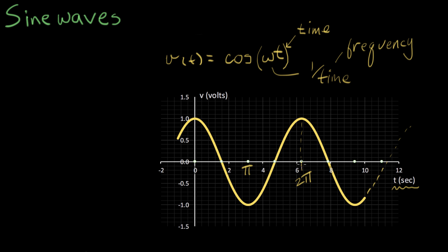So that's 6.28 seconds. So for this image here, omega has the value of one. So when time, t, reaches two pi seconds, we've gone through one full cycle.